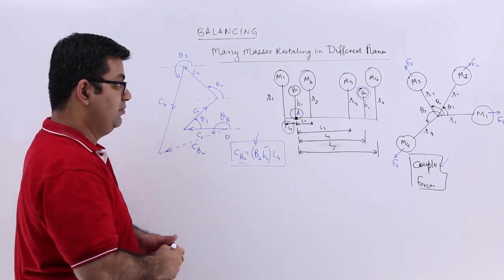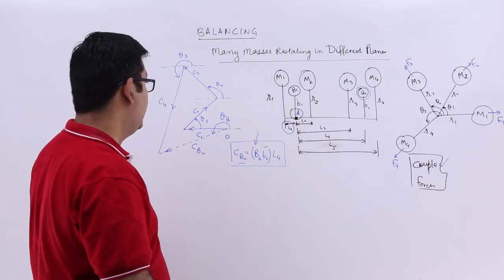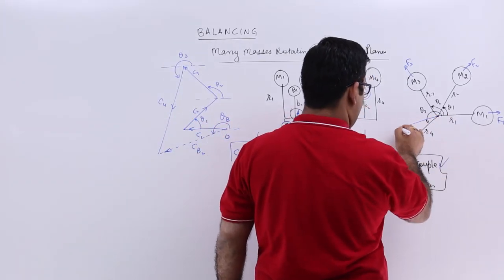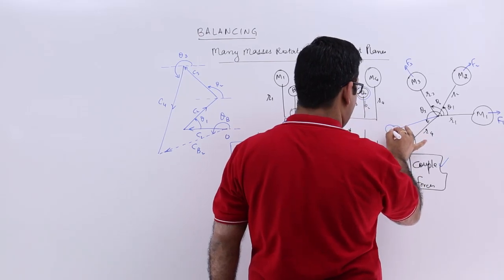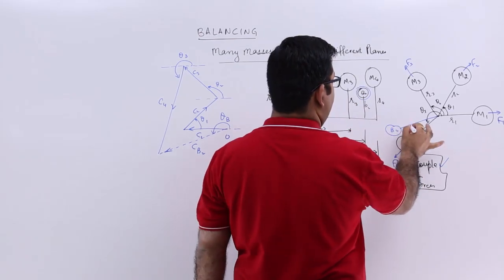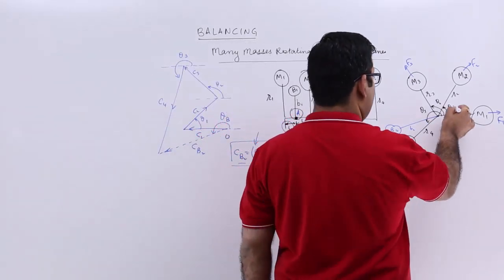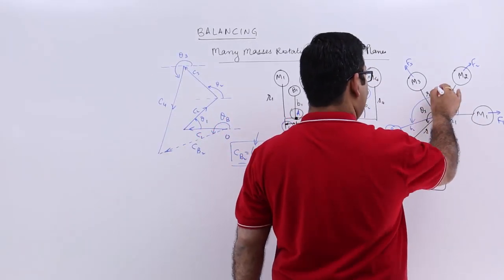So from, if I have to draw it on that, it would be somewhere over here. So this is B2 at small b2 radius. And the orientation would be theta B.